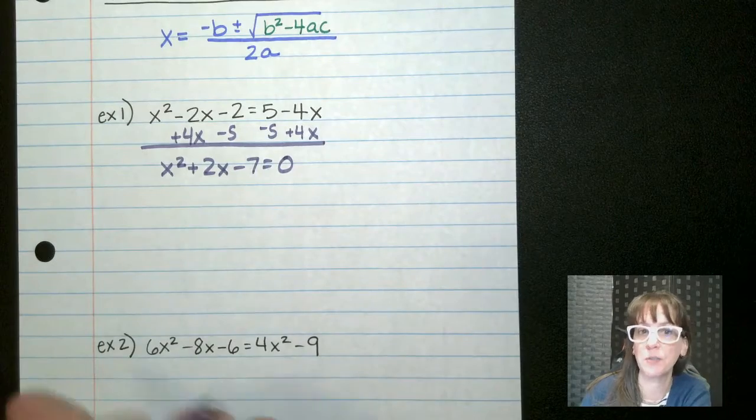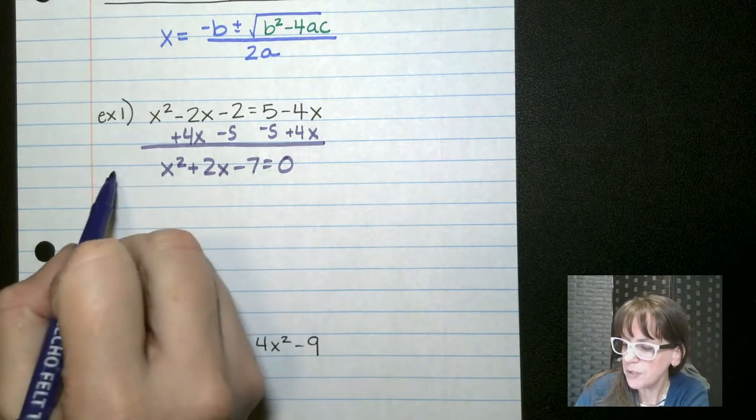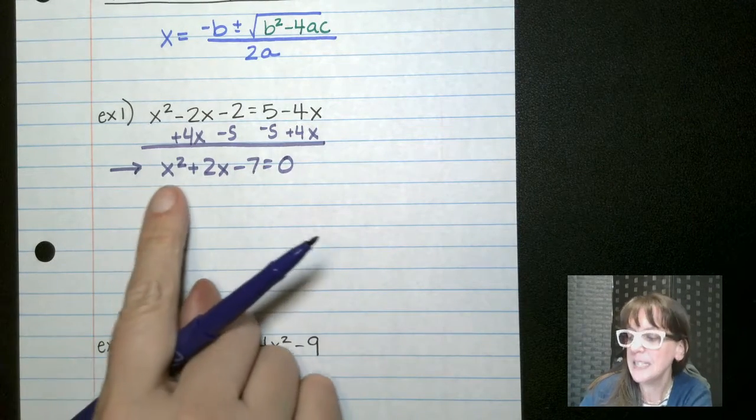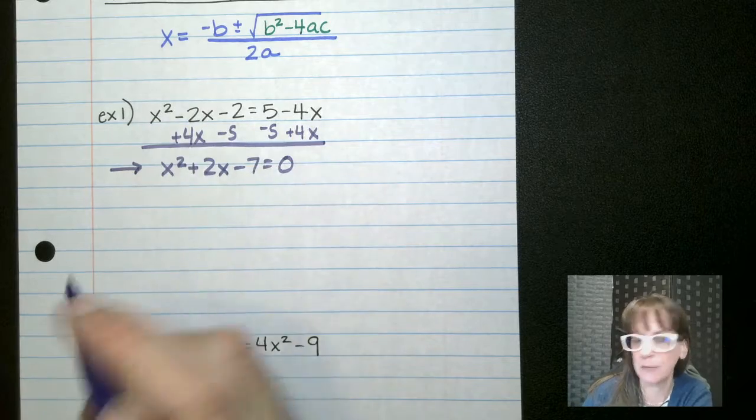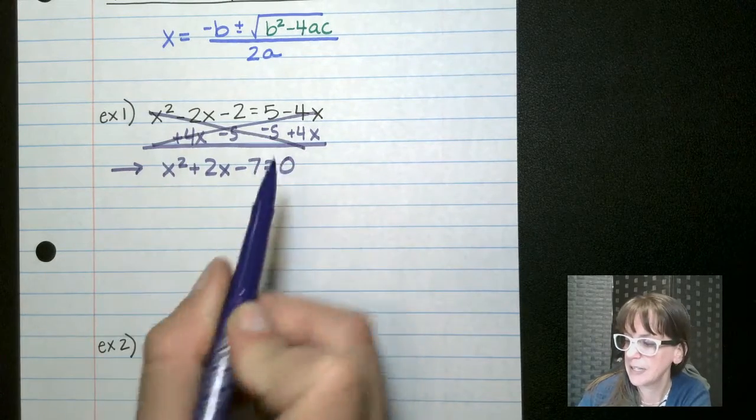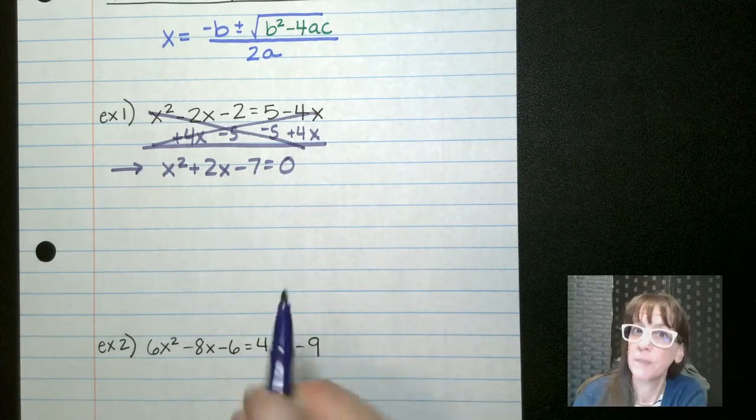Okay so now we're ready to use our quadratic formula. And if you need to draw a little arrow pointing to it, because this is what we're going to be using, not any of this stuff. In fact, we can cross all that out when we use our formula. Remember, start with your discriminant.